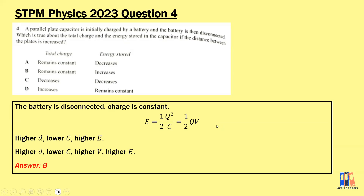I don't recommend referring to half CV² here because both C and V are changing variables — if you have two changing variables, it's difficult to determine if energy is increasing or decreasing. The ideal formula is half Q²/C or half QV, since charge is certainly constant when the battery is disconnected.